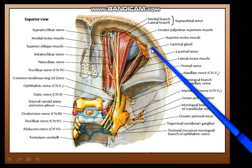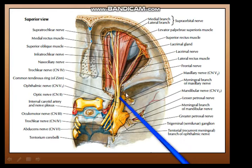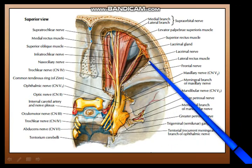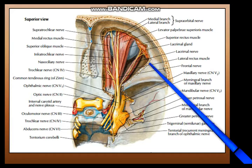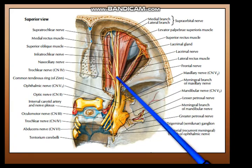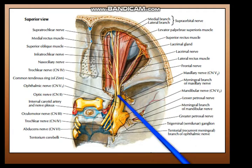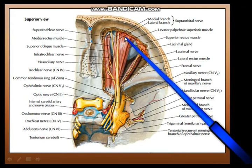In dissection of the orbit, we cut a triangular section from the roof — from the orbital plate of the frontal bone and the lesser wing of the sphenoid — opening up the superior orbital fissure. Once you have removed the roof of the orbit, you find the orbital periosteum. After gently removing this periosteum in a triangular fashion, just under the periosteum you can see the frontal nerve. From the ophthalmic division of the trigeminal nerve you have the lacrimal nerve, the frontal nerve, and the nasociliary nerve; the frontal nerve is the most superficial, lying just underneath the periosteum over the levator palpebrae superioris muscle.